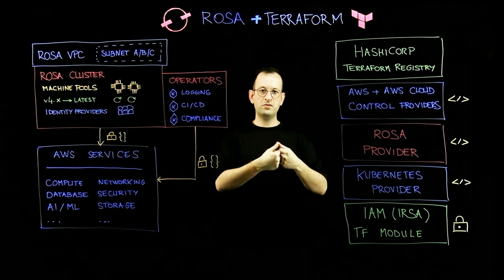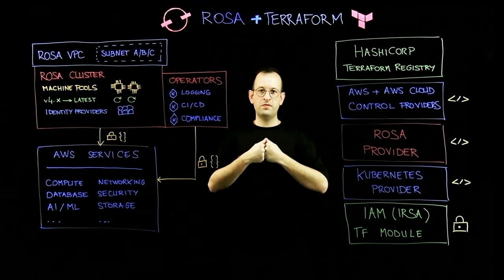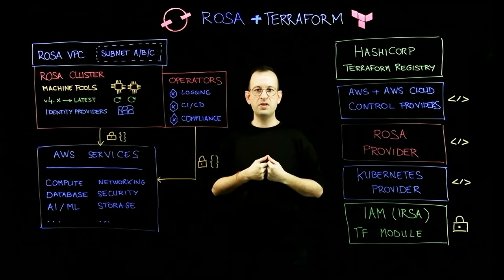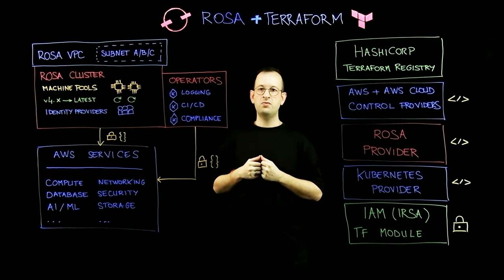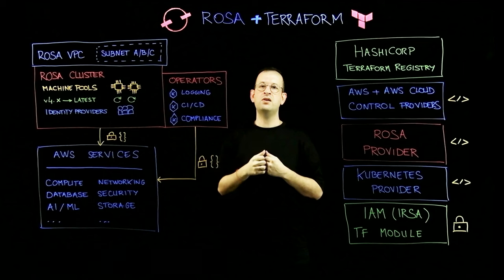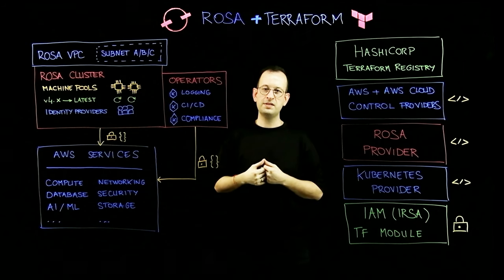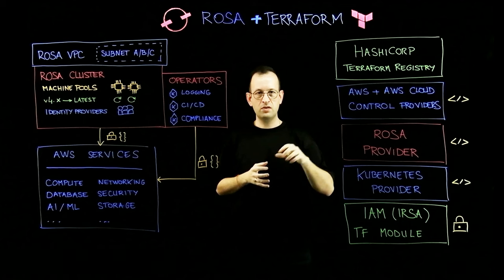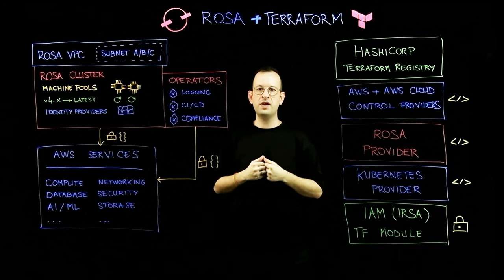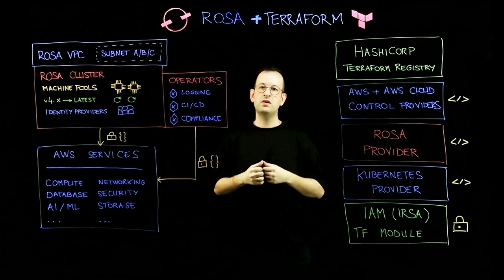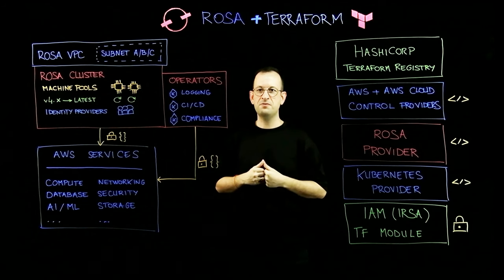To get started with ROSA, the first step is to think about the networking components required for deploying ROSA. You would need to deploy ROSA inside a Virtual Private Cloud, or VPC, along with some subnets. To do that, we bring in the AWS or the AWS Cloud Control provider. These two providers help automate hundreds of AWS services.